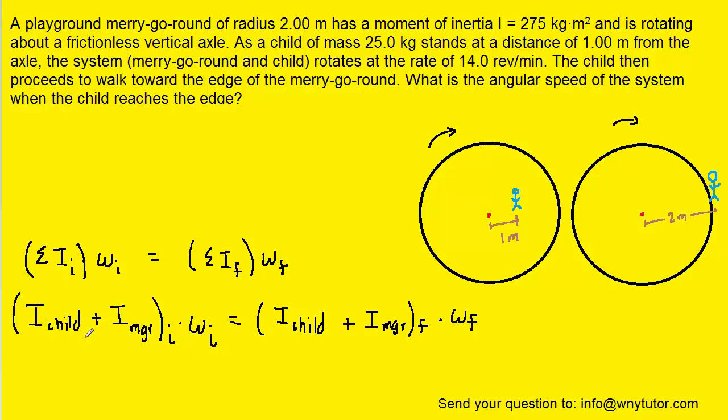Now it turns out that for the child we can treat that child as a point object. Maybe not so nice for the child but good for the physics. So it turns out that the rotational inertia of a point particle is equal to the mass of the particle times r squared.